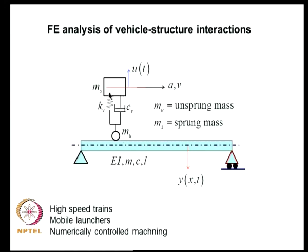MU is the unsprung mass, MS is the sprung mass, and KV and CV are the vehicle spring and damping coefficients. This type of problem is currently gaining importance because of the development of high-speed trains, mobile aircraft launchers, and even numerically controlled machines where tools move on the job at fairly high speed to enhance productivity.